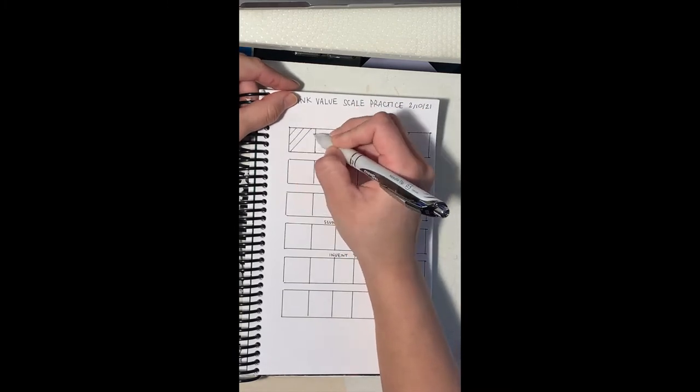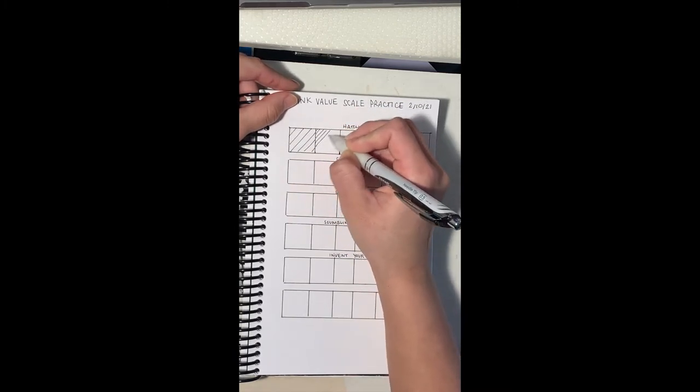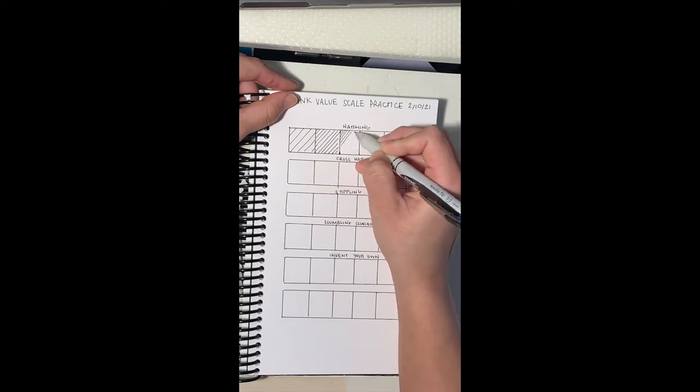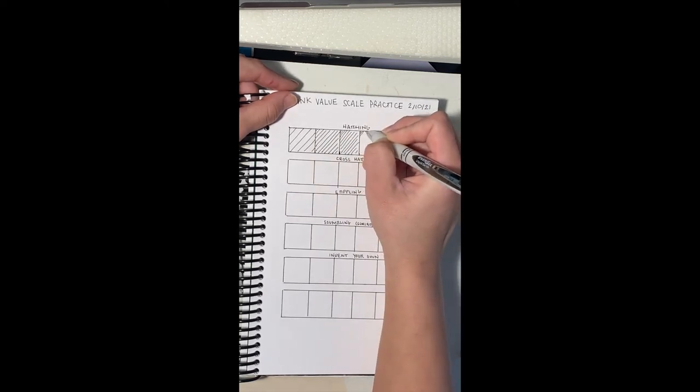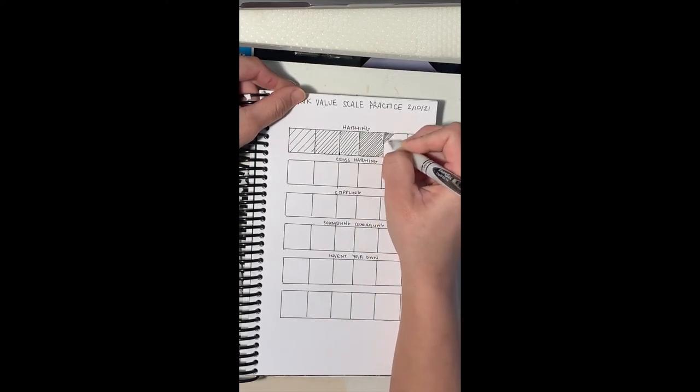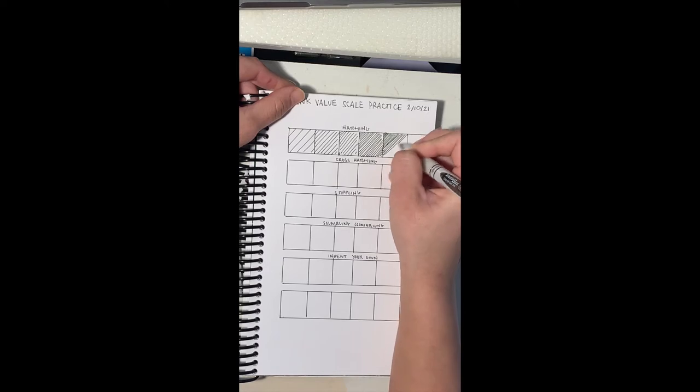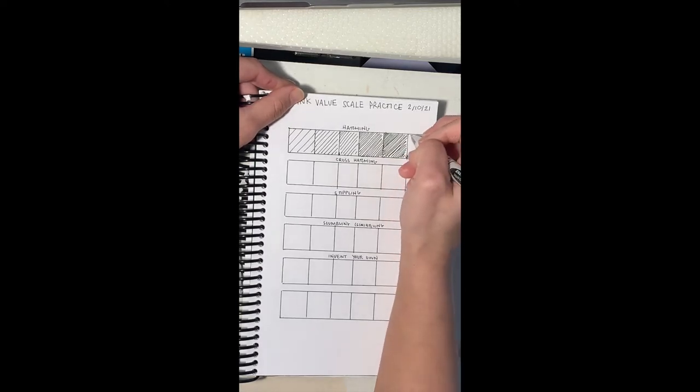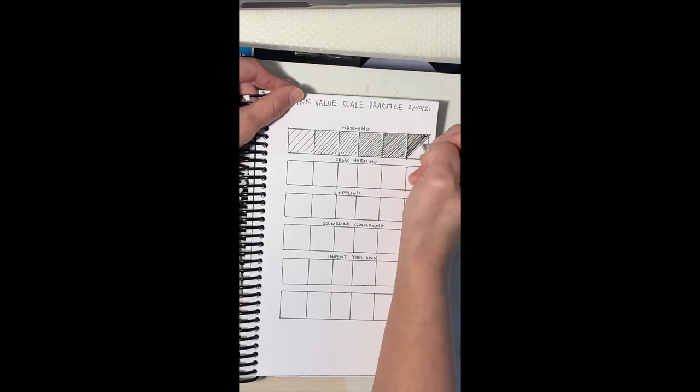So hatching is just making lines one direction and I add more lines for each level of my value scale. They get closer and closer together, but the weight of the line is the same. It's not weighted line. It's just about how close the lines are together. And this is sped up.